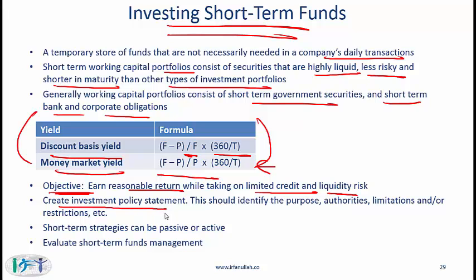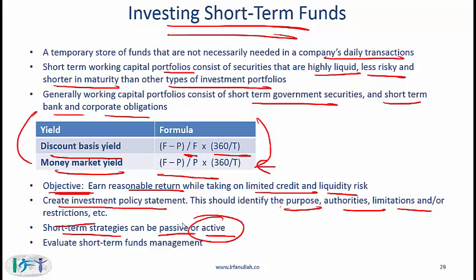You need to create an investment policy statement (IPS). Since an investment is involved, you need a formal IPS identifying the purpose, authorities, limitations, and any restrictions — for example, restricting investments to government securities and highly rated corporate instruments. The investment strategy can be passive or active. A passive strategy sets rules about what is allowed to be purchased. An active strategy is more active — you might match cash needs with investments, putting money in a two-year security if you know you have a major cash need in two years. You also need to evaluate your short-term fund management by comparing returns against benchmarks and other companies in your industry.